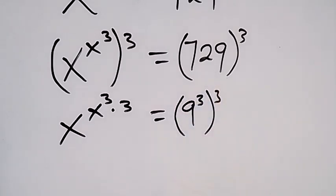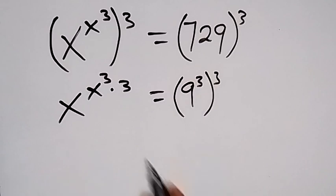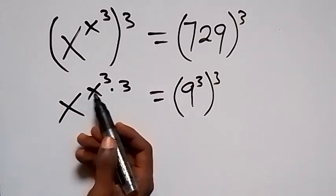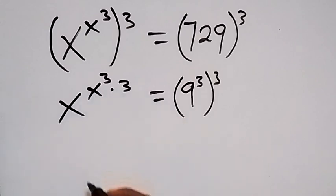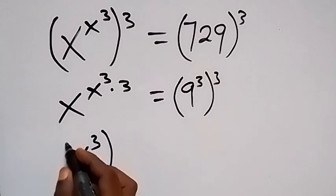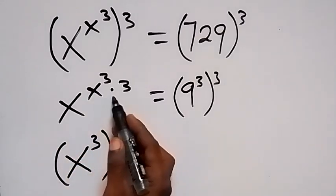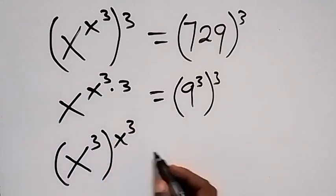729 can be written as 9 raised to power 3. Then, let's rewrite the left side, separating the powers and taking X raised to power 3 out. This becomes X raised to power 3 raised to power X raised to power 3, which is the same because the powers multiply.